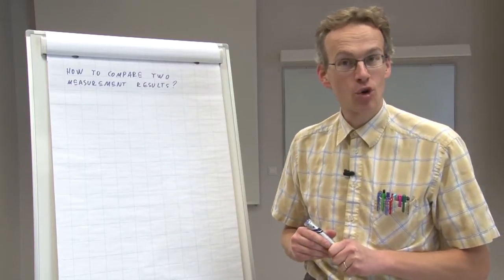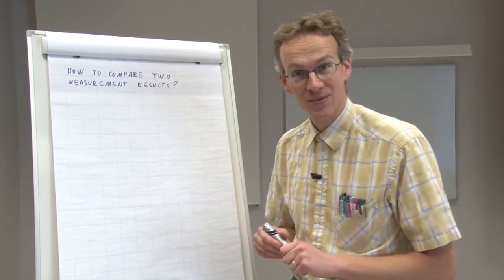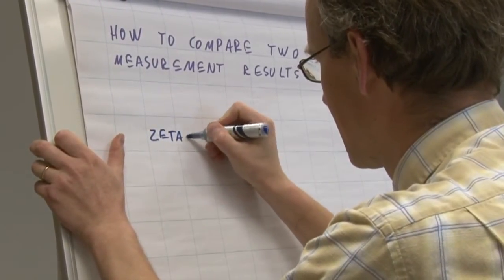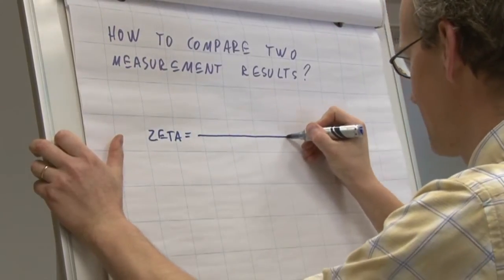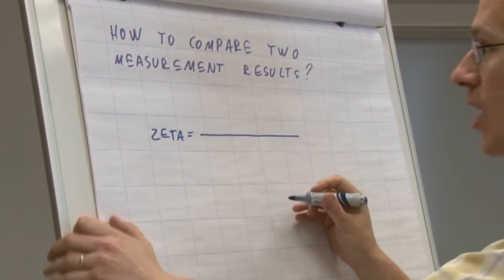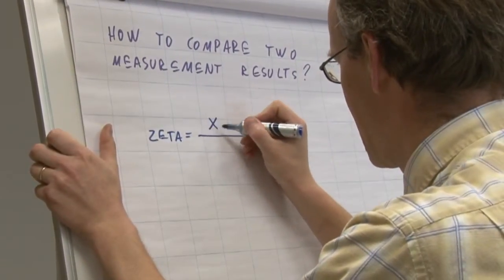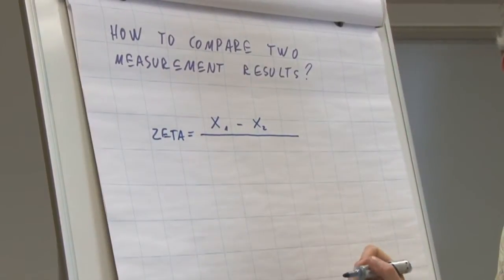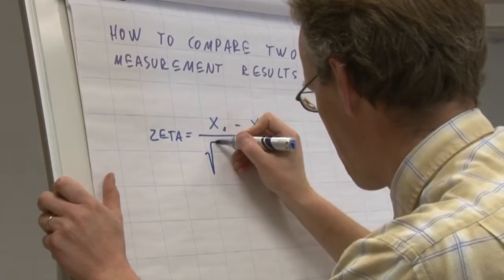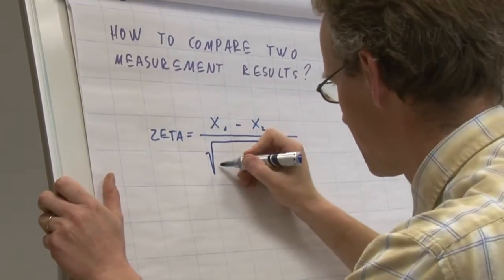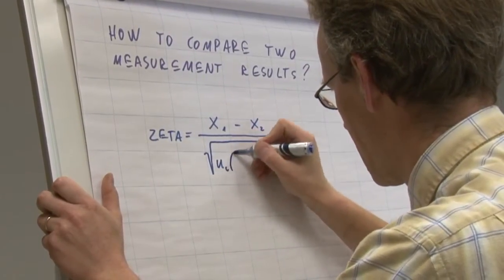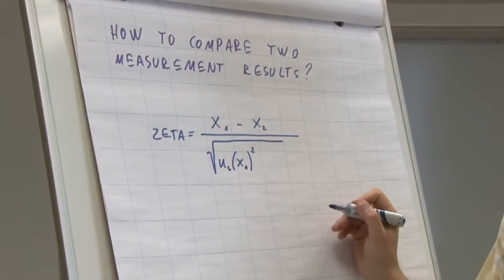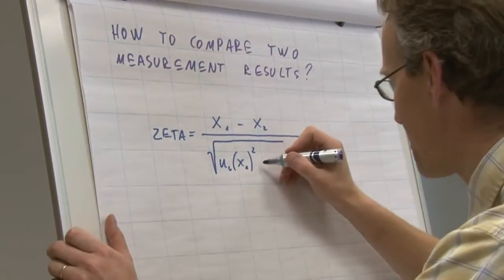The zeta score of two measurement results is found as follows. It's the ratio of the difference between result 1 and result 2, divided by the square root of the sum of squared combined standard uncertainties.